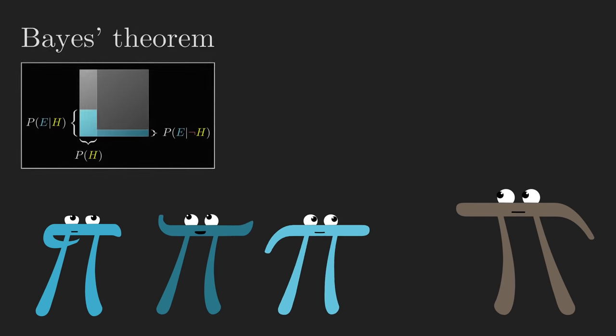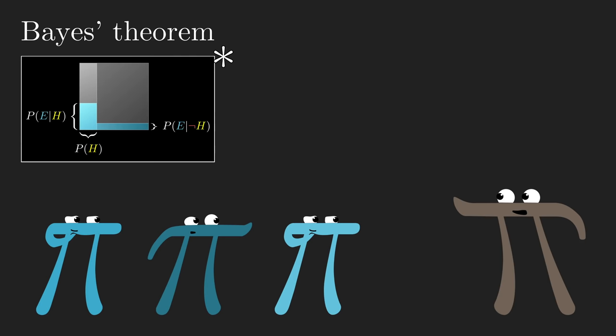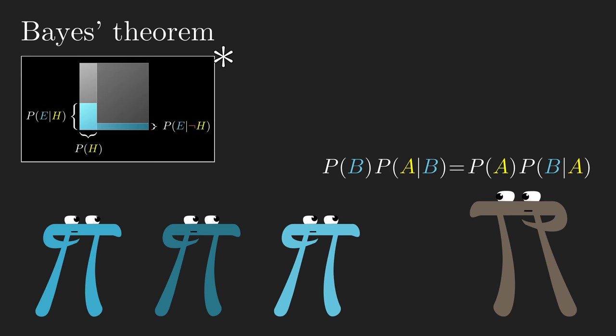This is a footnote to the main video on Bayes' Theorem. If your goal is simply to understand why it's true from a mathematical standpoint, there's actually a very quick way to see it based on breaking down how the word AND works in probability.